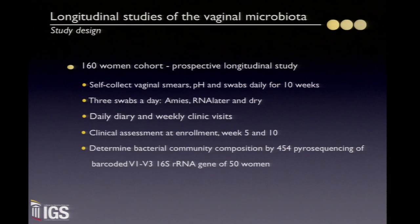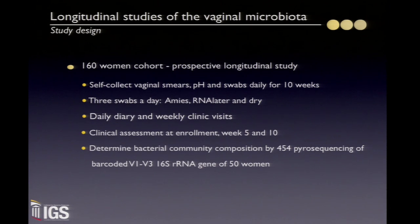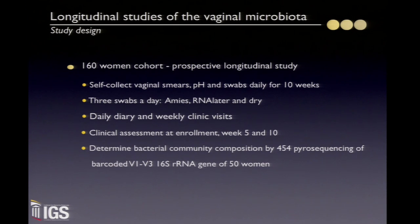To address this question, we performed a study enrolling 160 women in a prospective longitudinal study, collecting samples every day as women went through a 10-week period. We collected everything — hoping that certain conditions would occur so we could study what happened before, during, and after events in the vaginal microbiota. The study aimed at not only looking at DNA, but also RNA, metabolomics, and proteomics, with extensive daily diaries, weekly clinic visits, and clinical assessments at enrollment, week 5, and week 10, using pyrosequencing of the V1-V3 region.